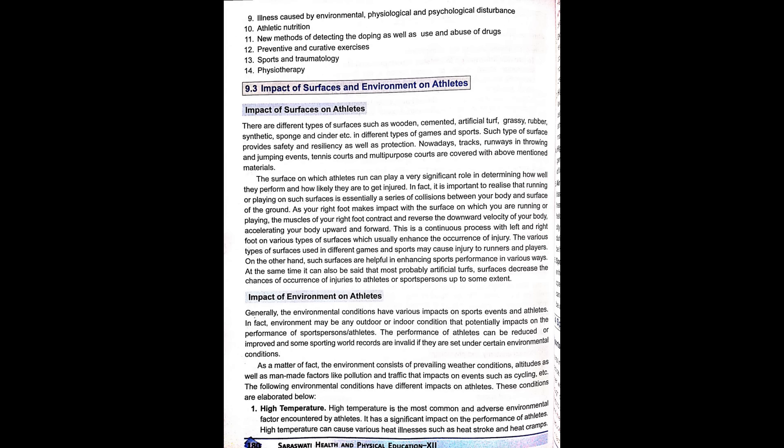Impact of Environment on Athletes. Generally, the environmental conditions have various impacts on sports events and athletes. The environment may be any outdoor or indoor condition that potentially impacts on the performance of sportspersons or athletes. The performance of athletes can be reduced or improved, and some sporting world records are invalid if they are set under certain environmental conditions. The environment consists of prevailing weather conditions, altitude, as well as man-made factors like pollution and traffic that impact on events such as cycling. The following environmental conditions have different impacts on athletes.